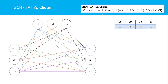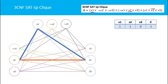With x1=1, x2=1, x3=0: x1 in the first clause is true, x2 in the second clause is true, and x2 in the third clause is true. These three literals make the equation true. Correspondingly, I find a clique of size 3 in the graph: draw a line from x1 of the first clause to x2 of the second clause, then from x2 of the second clause to x2 of the third clause, and there is already an edge completing the triangle — a clique of size 3.